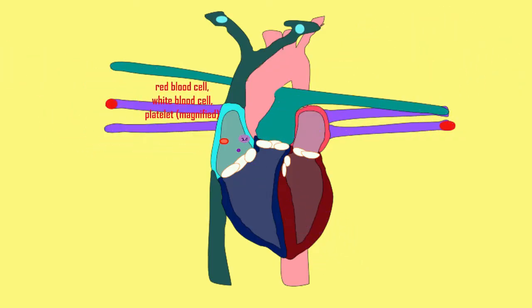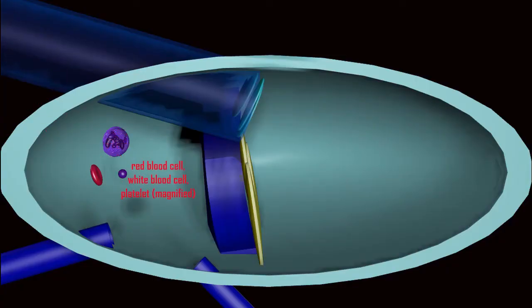While there are three ways to get into the right atrium there's only one way to leave. The right atrium empties into the right ventricle which is inferior to it.